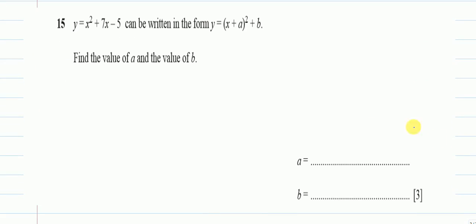Question number 15: We have the equation y equals x squared plus 7x minus 5. This is a quadratic equation, and it can be written in this format, which is known as completing the square method. If you are not aware how we do it, I will show you right now.